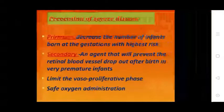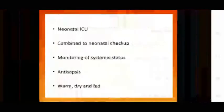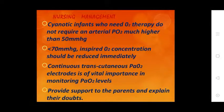Prevention of severe disease: primarily, decrease the number of infants born at gestations with the highest risk. Secondary prevention involves agents that prevent retinal blood vessel drop after birth in very premature infants, and limiting the ways of proliferation through safe oxygen administration.